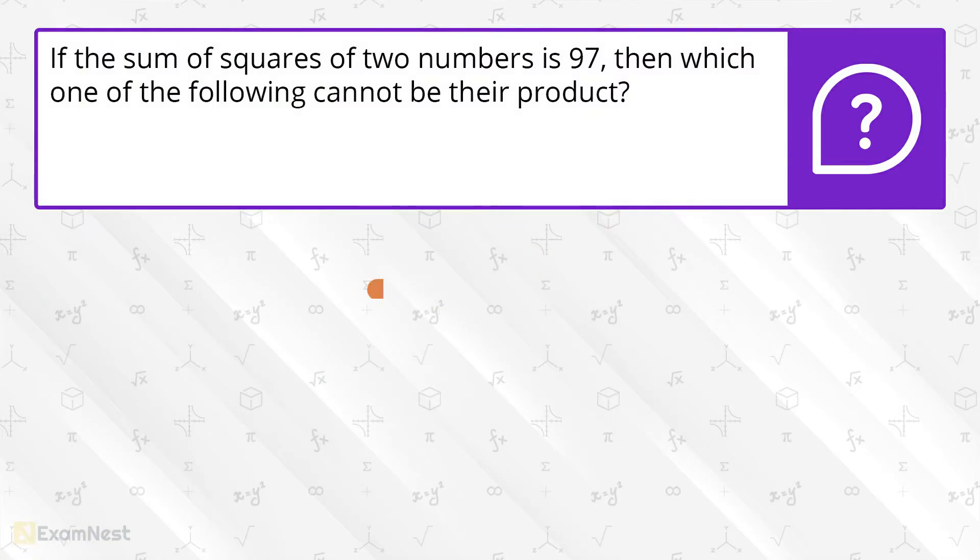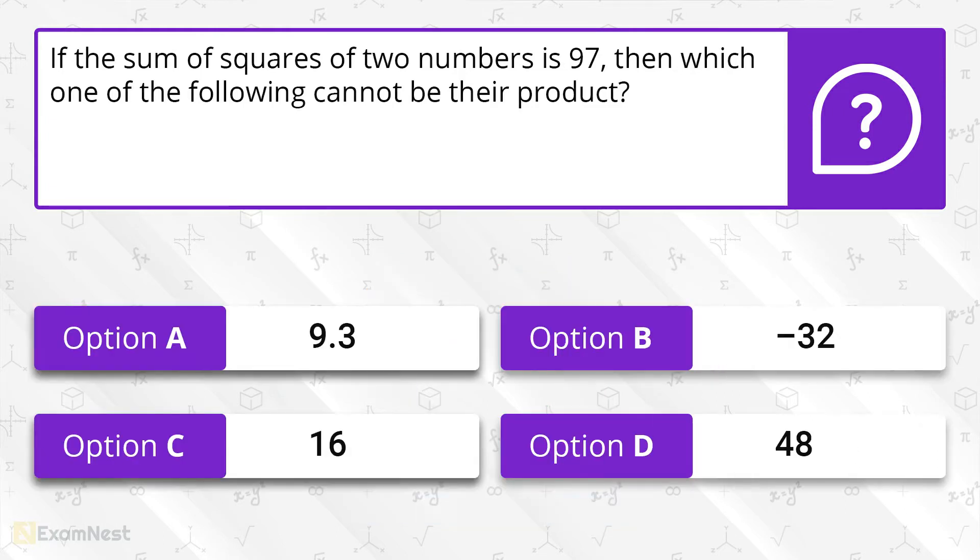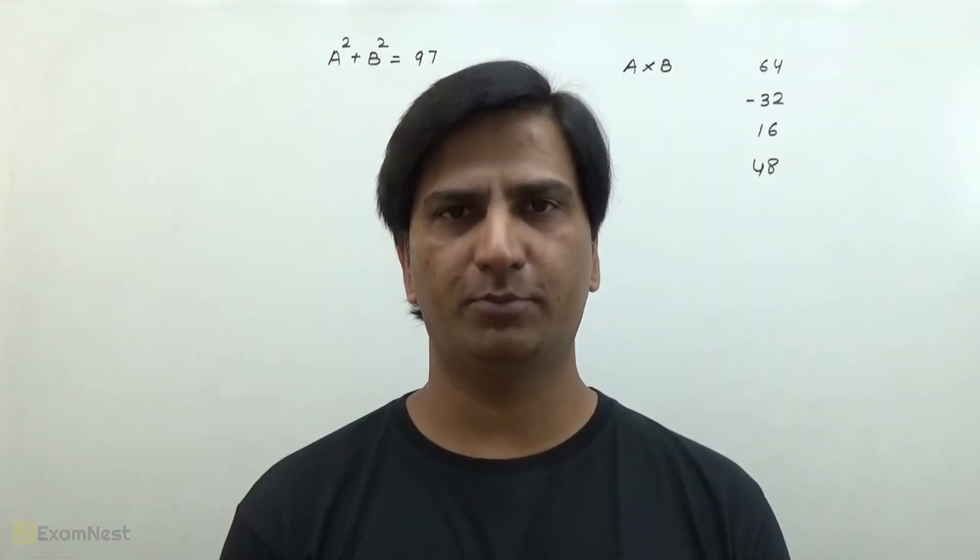If the sum of squares of two numbers is 97, then which one of the following cannot be their product? The options are given. This is a moderate level question.